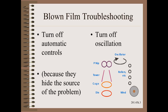Before we begin the specific case of blown film troubleshooting, let us begin with the more general situation involving automatic gauging controls. It is always a good idea to briefly turn off the automatic controls to see what they are trying to correct for. Finding the biggest sources of variability and reducing them will allow the automatic controls to perform even better.